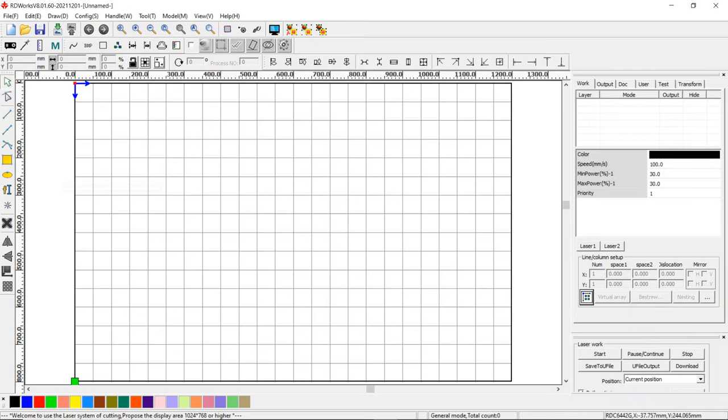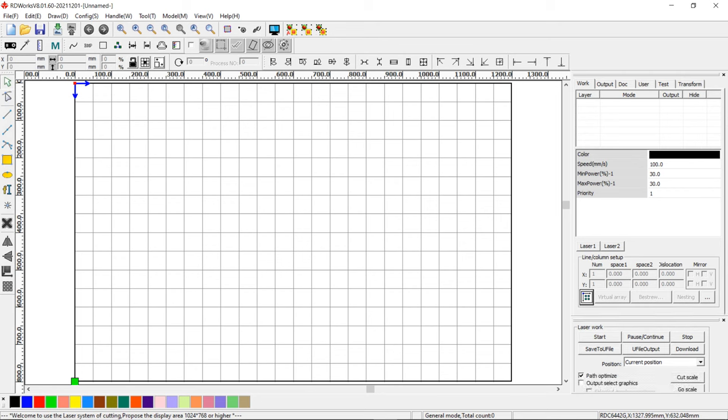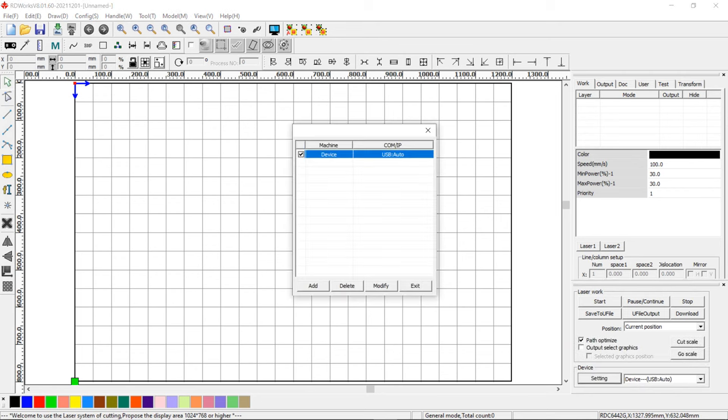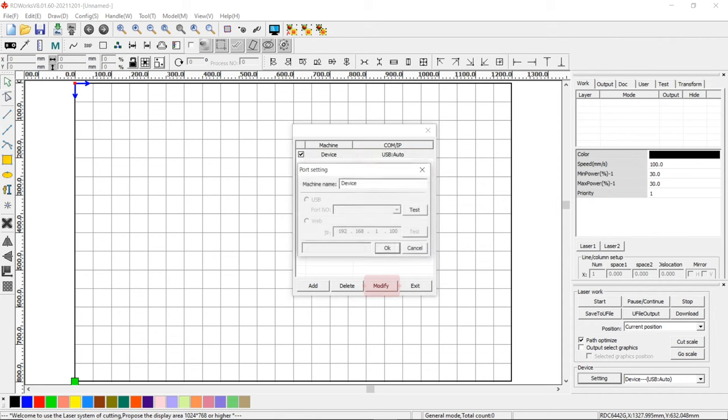Run RDWorks. The first thing you should check is whether the USB port works and all drivers have been installed. To check it, open Setting, press Modify, and then Test. Port Test Success means that the computer is connected to the machine. Everything is okay.